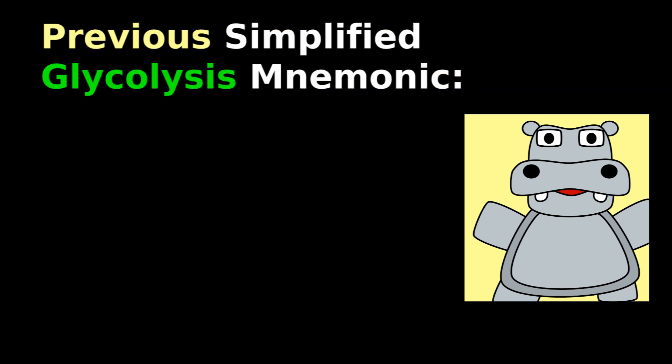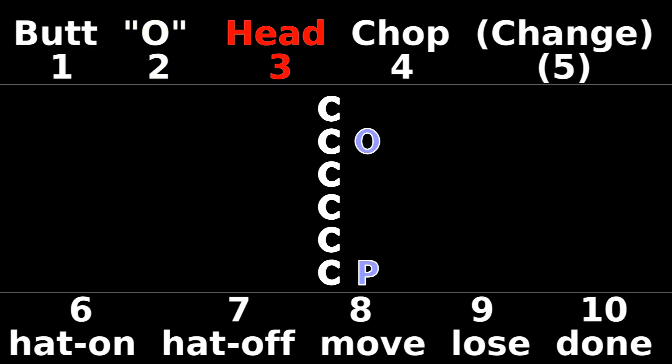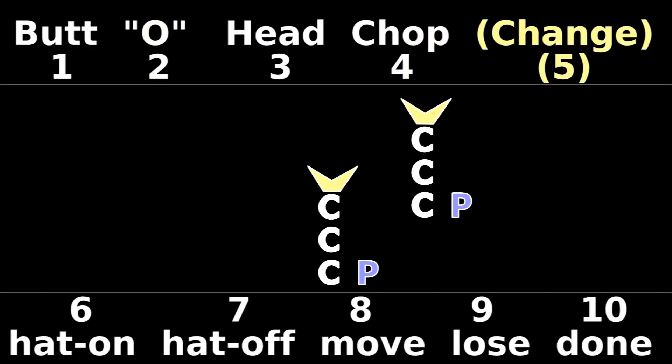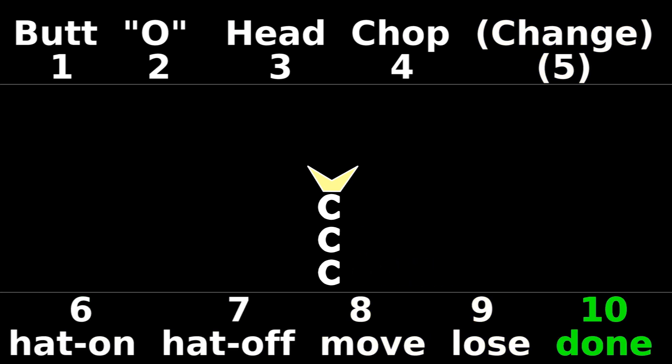HelpHippo's simplified glycolysis mnemonic is: butt, o, head, chop and change, hat on, hat off, move, lose, done.